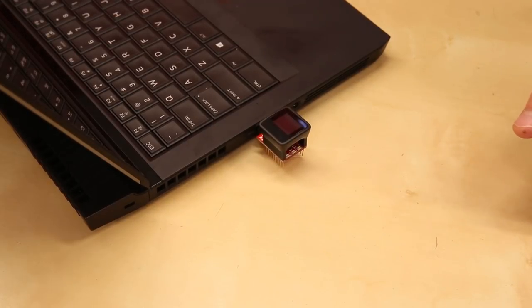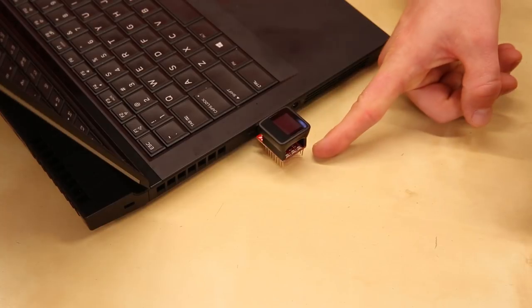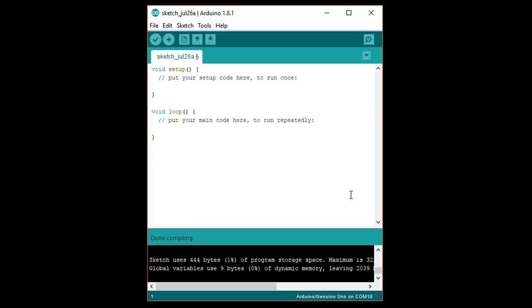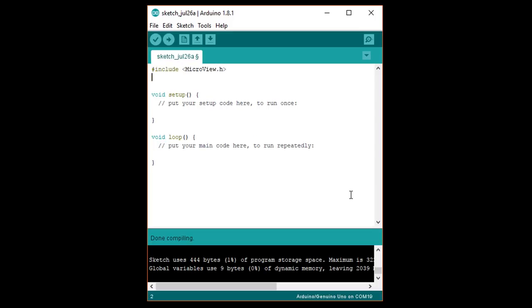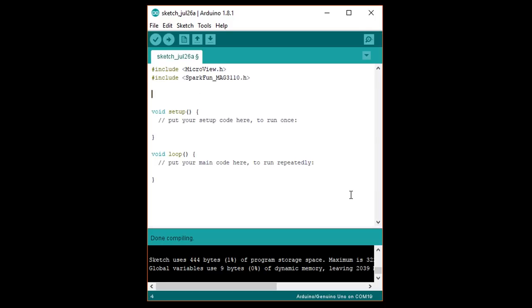Note that the MAG-3110 is a 3.3 volt part, so we can't use the microview programmer with it as the programmer outputs 5 volts. In a new sketch, write pound include microview dot h, and pound include sparkfun underscore MAG-3110 dot h. Follow that with MAG-3110 MAG equals MAG-3110 open parentheses close parentheses to instantiate a new object for our magnetometer.